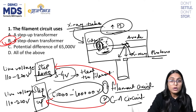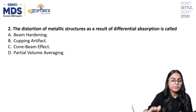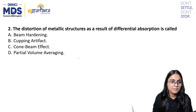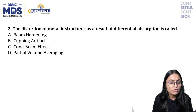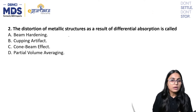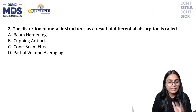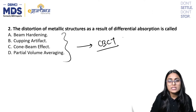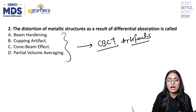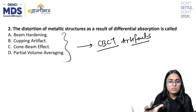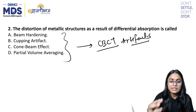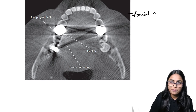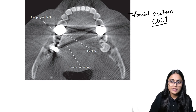Moving on to the next question: the distortion of metallic structure as a result of differential absorption is called — Option A: beam hardening, Option B: cupping artifact, Option C: cone beam effect, Option D: partial volume averaging. By reading the given options, you can tell they are asking about a CBCT artifact. The question is about distortion of metallic structures as a result of differential absorption.